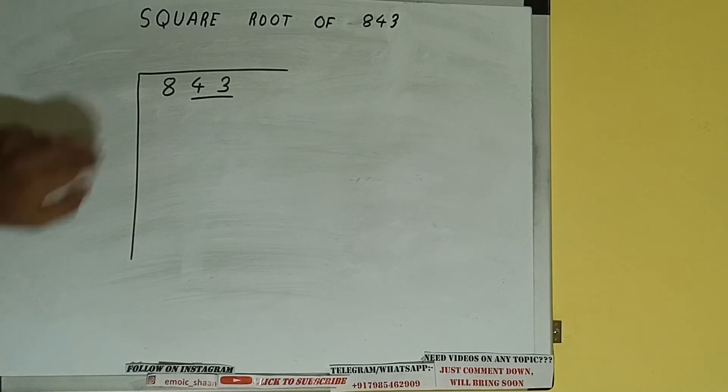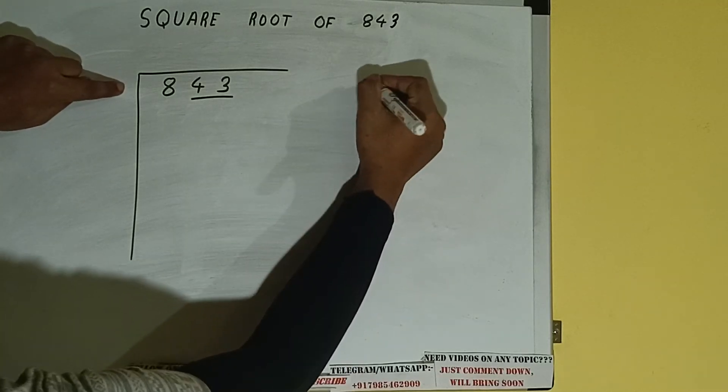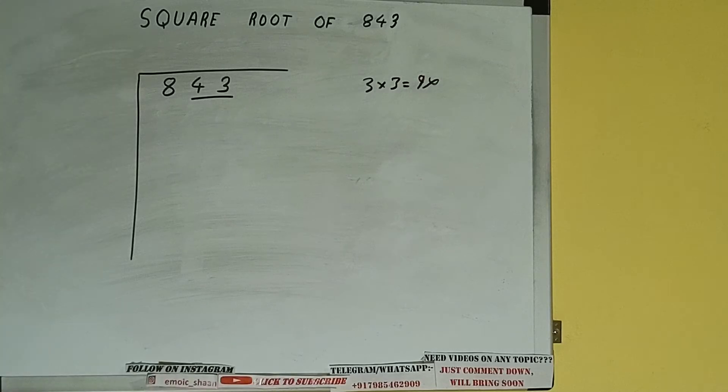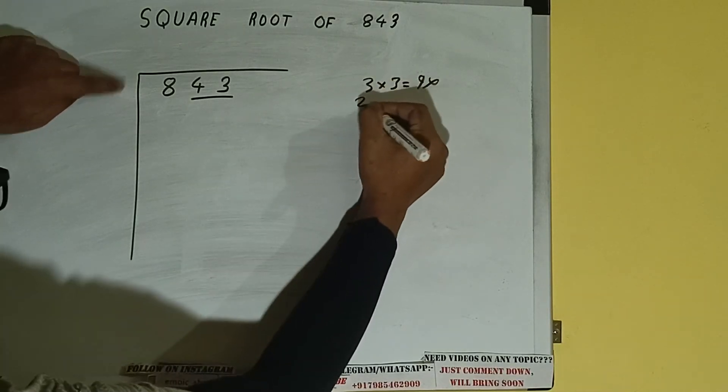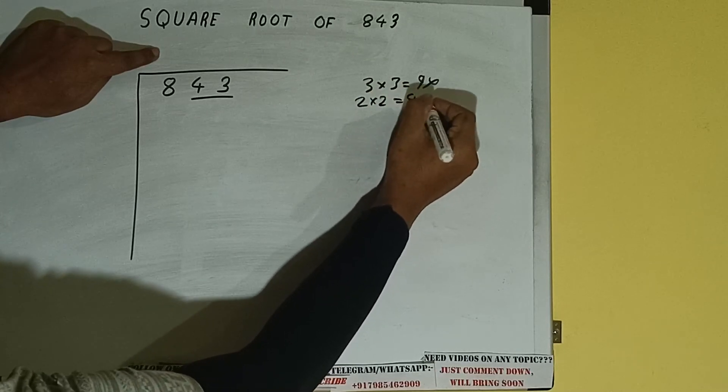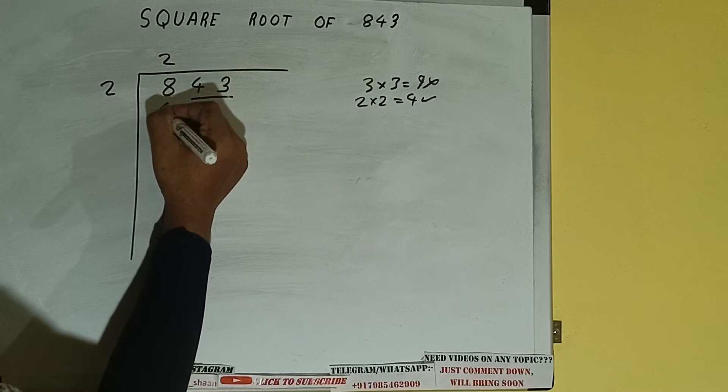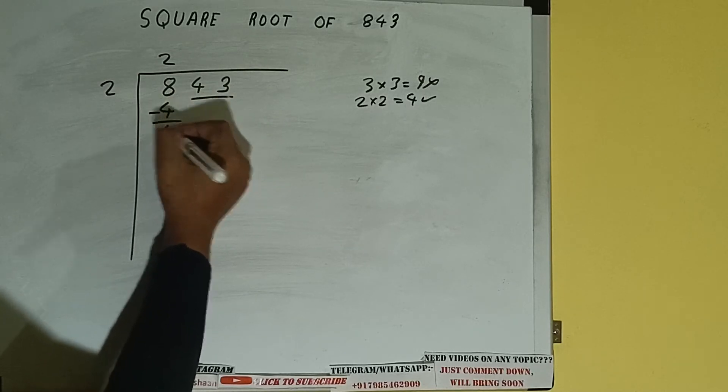The rule is whatever number we write here we have to write here also. So if we write 3 here and 3 here it will be 9 which is greater than 8, so we cannot take it. If we write 2 here and 2 here it will be 4 which is good to take. So 2 here and 2 here, 4. Subtract, 4 will be left.